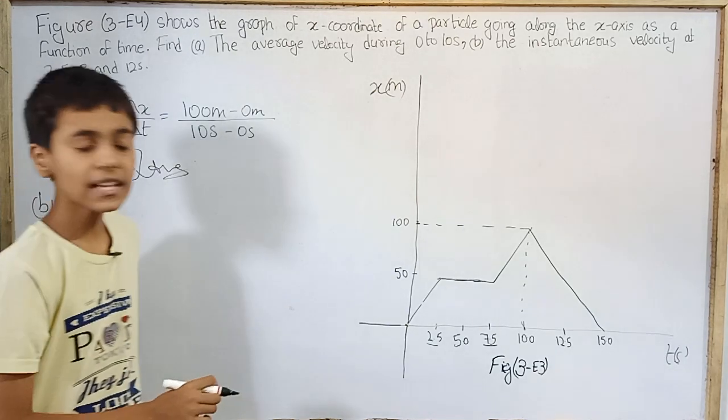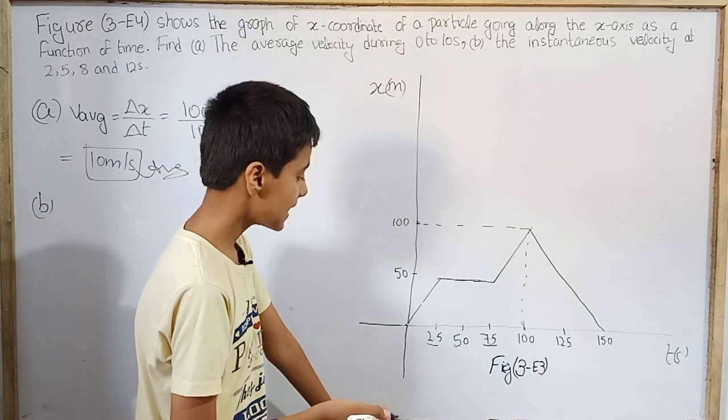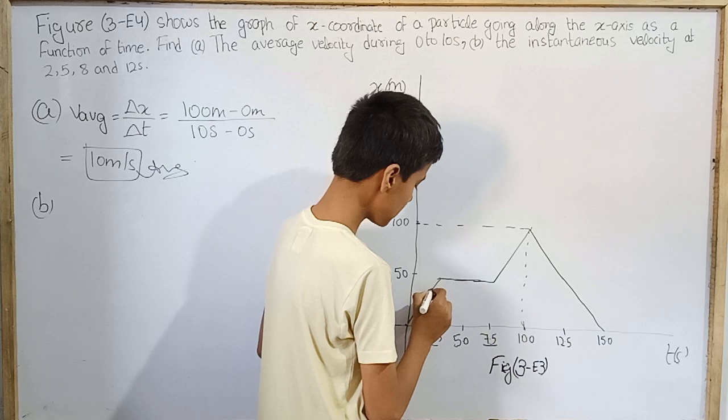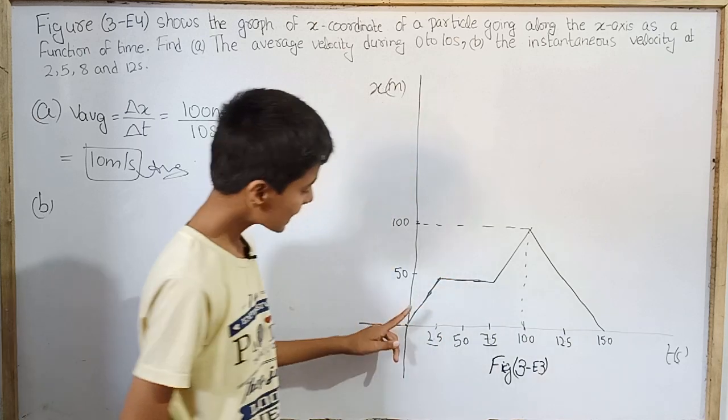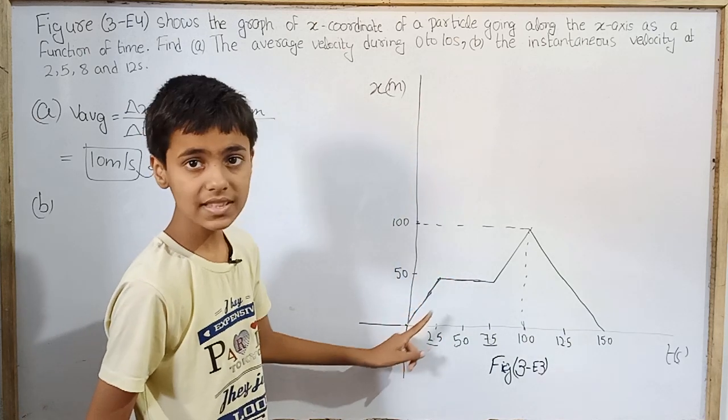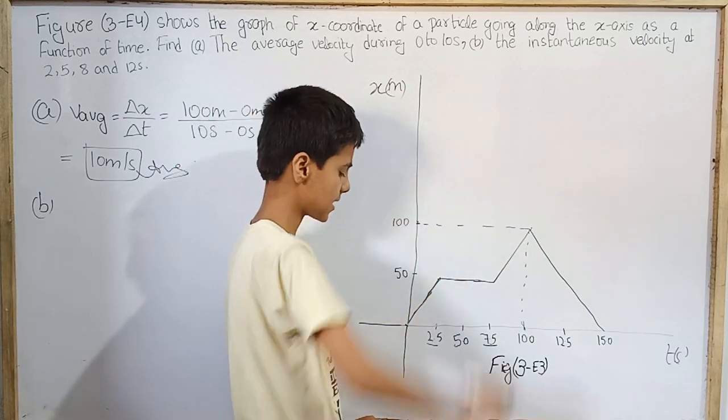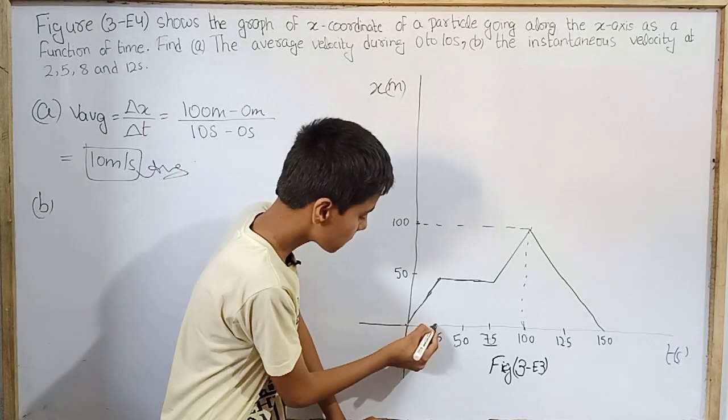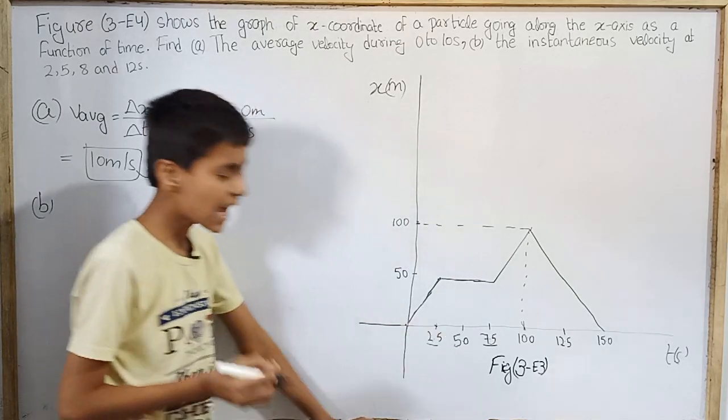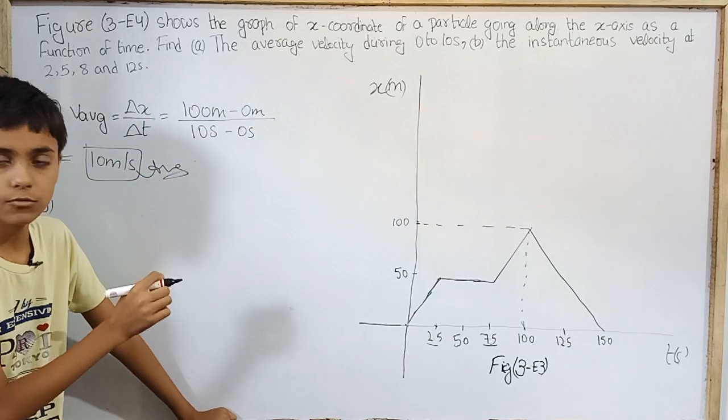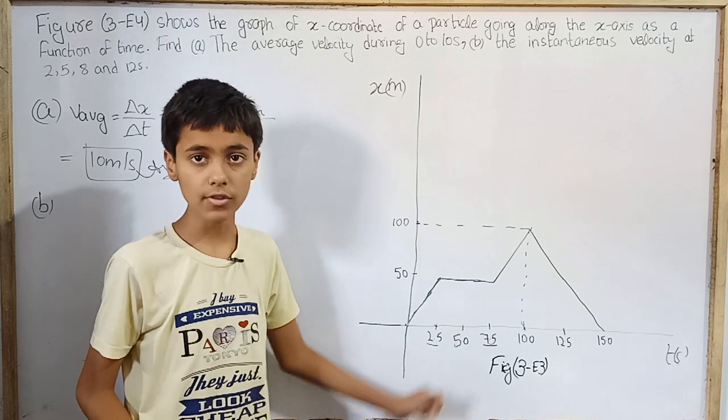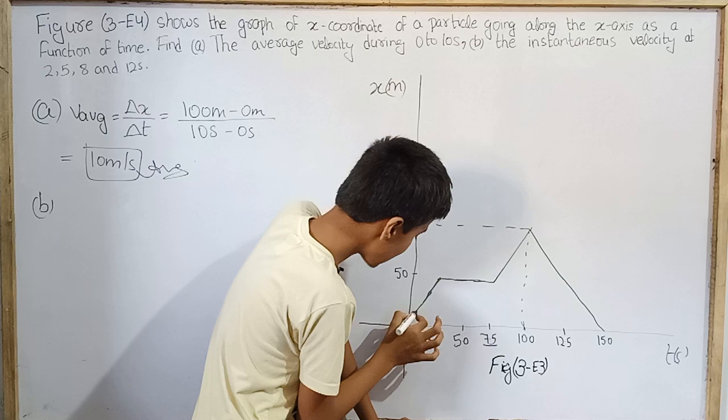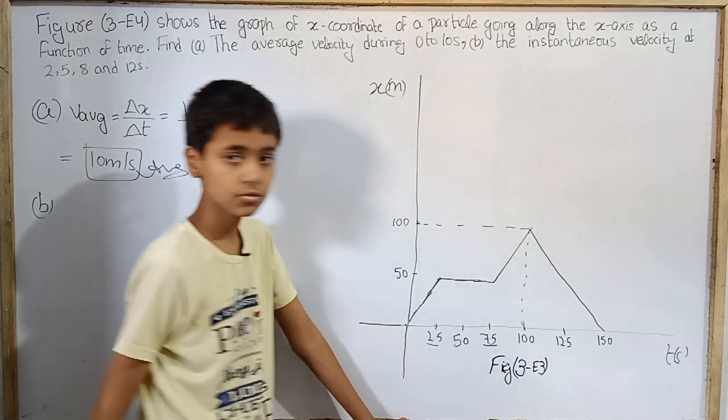Now for instantaneous velocity at 2, 5, 8 and 12 seconds. This important thing: here from 0 to 2.5 seconds, if we see this graph, the slope is constant. So slope is constant, positive as well as constant 0 to 2.5 seconds. Where there is a constant slope, that is velocity constant. That means average velocity equals instantaneous velocity at every time between 0 to 2.5 seconds.